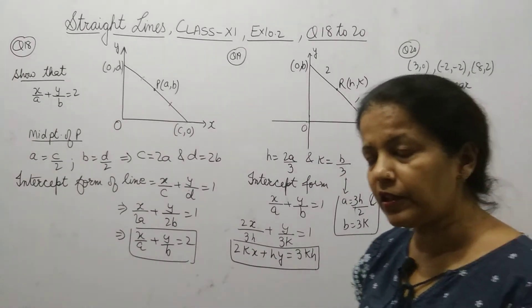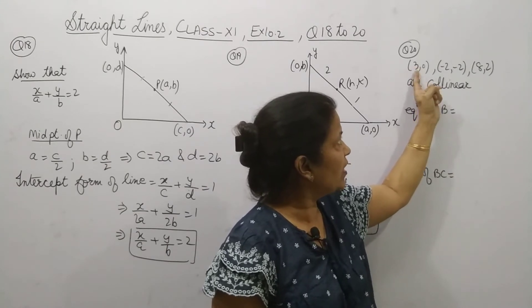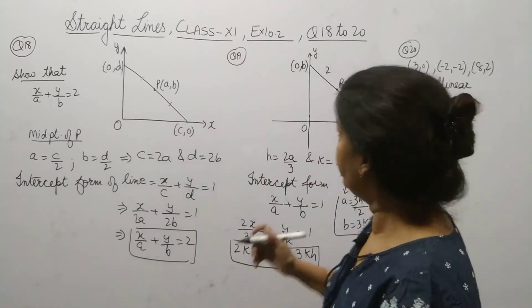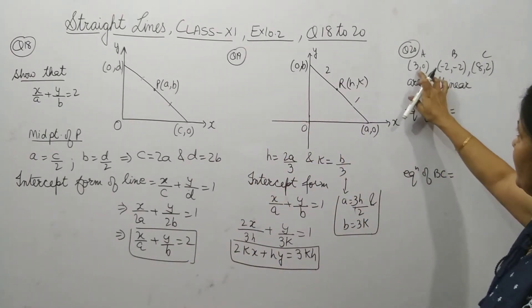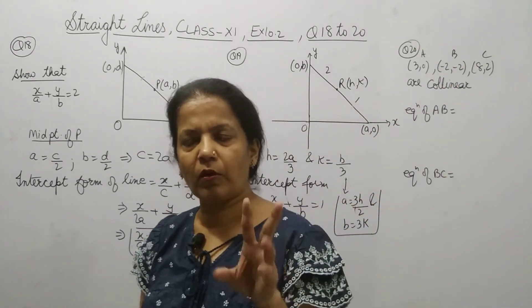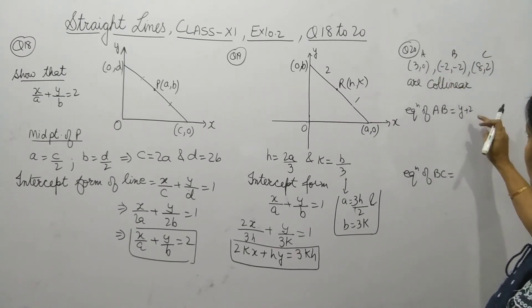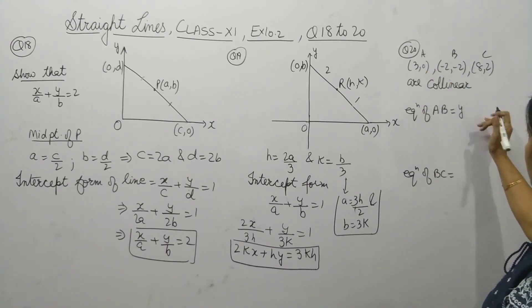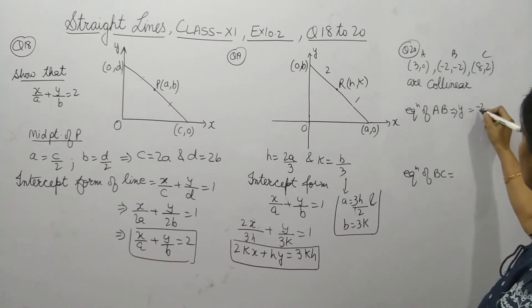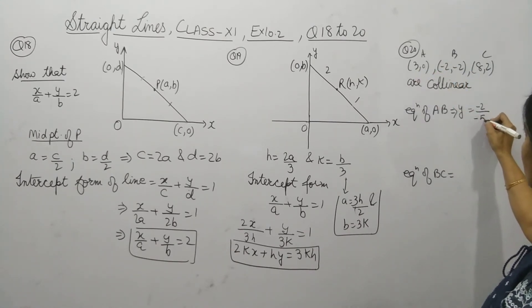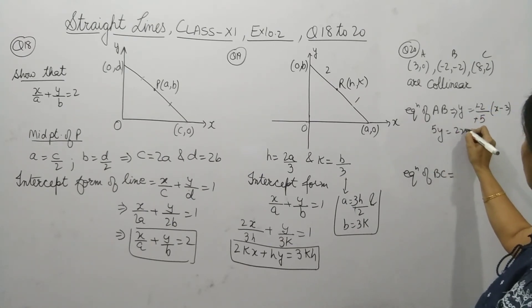Now in question 20, you have to prove whether the given points are collinear or not using the equation of the line concept. Let the points be A, B, and C. By using the equation of the line, first we will find out the equation of line AB. Two points are given, so we will use the two-point form: y − y₁ = [(y₂ − y₁)/(x₂ − x₁)] × (x − x₁). It will come as 5y equals 2x minus 6.